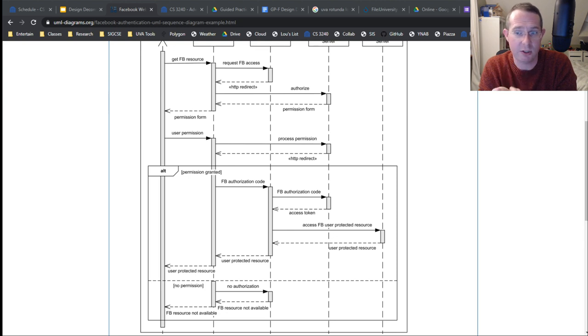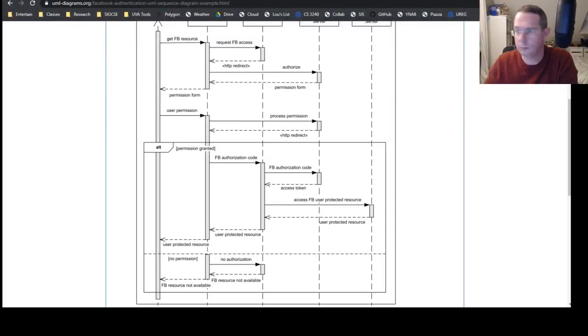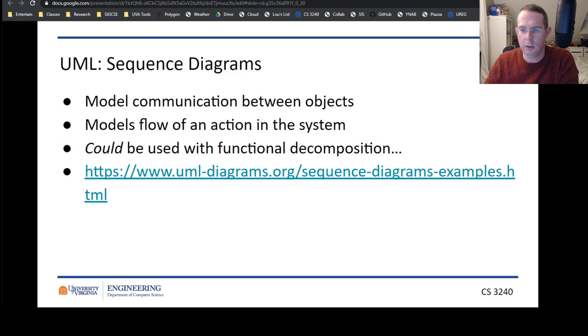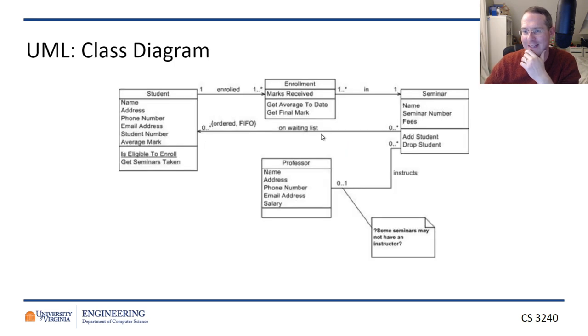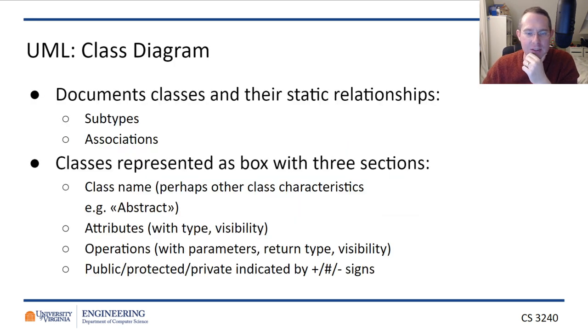This is a similar diagram to a functional decomposition, but it gives you more information about how data is actually passing between things. So, architecture people, this is a diagram you probably want to be thinking about doing for your ARC documents, because this is a great way of showing how does data actually pass in your system when you do OAuth login with Google or something along those lines.